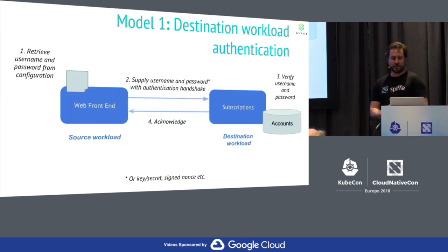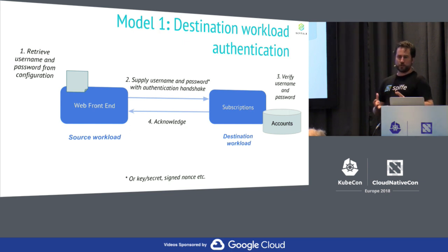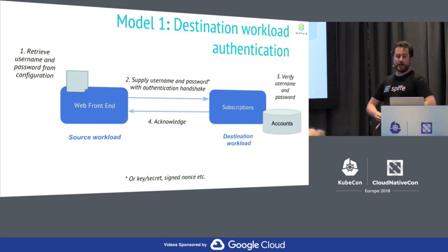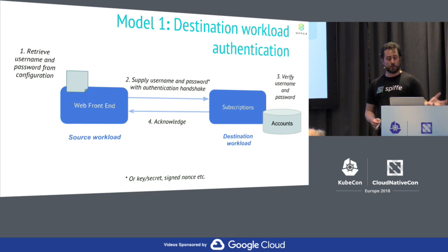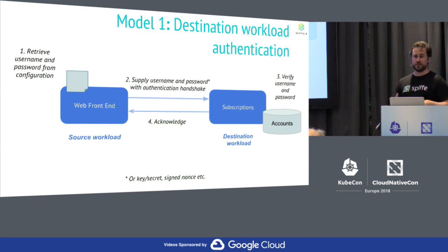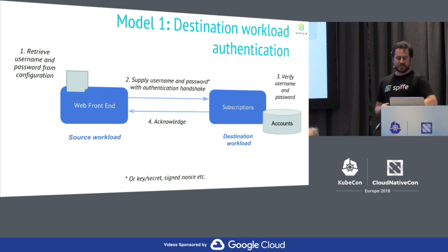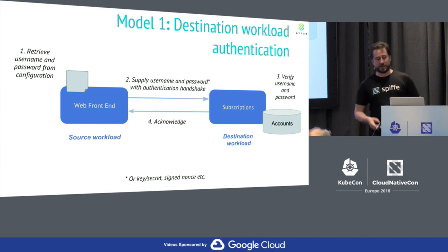Before we get to SPIFFE, it's worth recapping a couple of strategies used today to solve this. The first is classical trust management — I've generalized essentially every shared secret form of authentication here. A destination workload has some concept of identities for the source workloads that want to connect to it — a registry of accounts. A concrete example: I'm running a MySQL database with usernames and passwords stored in a table. I create an account to represent my source workload, take that credential, give it to the source workload, which uses it to authenticate.